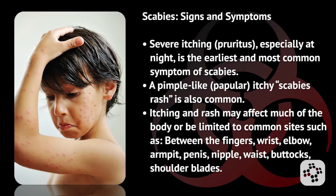Itching is very common, as is a skin rash. Severe itching, especially at night, is the earliest and most common symptom of scabies. A pimple-like, papular, itchy scabies rash is also very common. Itching and rash may affect much of the body or be limited to common sites such as between the fingers, wrists, elbow, armpits, penis, nipple, waist, buttocks, and shoulder blades.